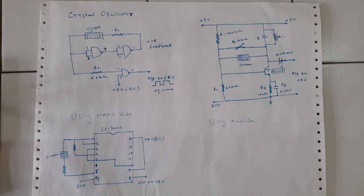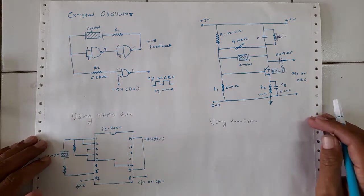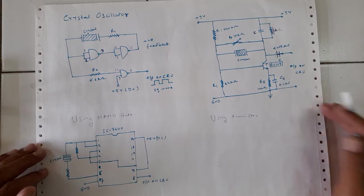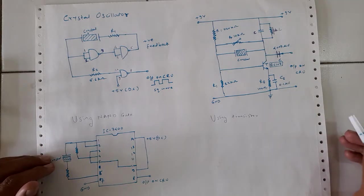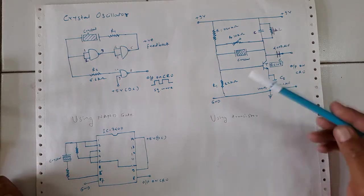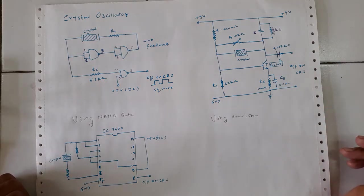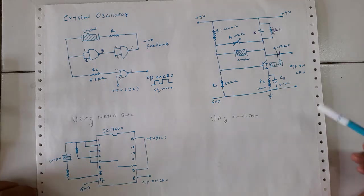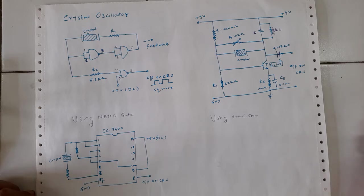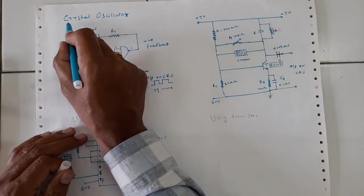Hello friends, welcome to the physics practical course semester one electronics lab. Today we are going to talk about one of the experiments — the crystal oscillator. Crystal oscillators are used wherever there is a requirement of very high frequency signal generation for longer periods of time as well as at certain particular temperature ranges.